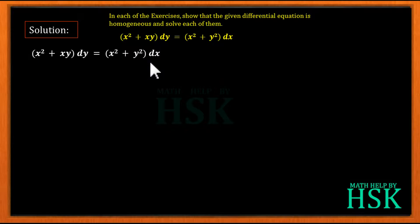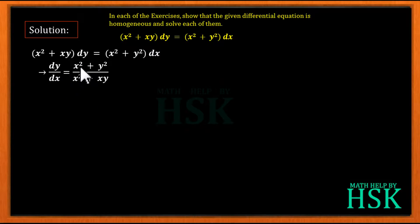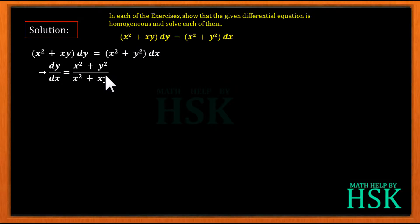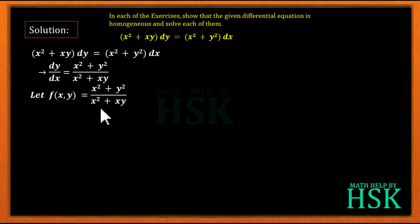Now we take the differential equation. To prove that it is a homogeneous differential equation, we write dy/dx as equal to (x² + y²) / (x² + xy). Whenever we are given a differential equation and have to prove it is homogeneous, we write dy/dx as equal to a function of x and y — generally a fraction function — and we call this function f(x, y).